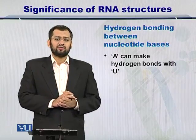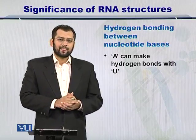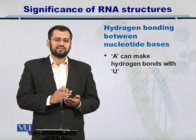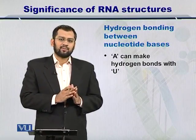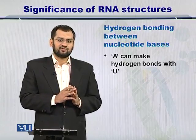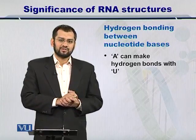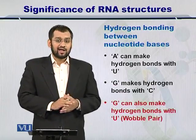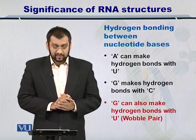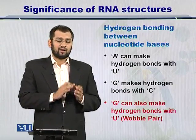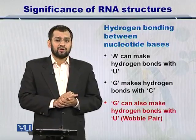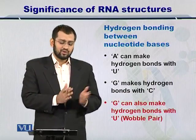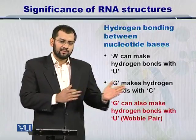To understand how these hydrogen bonds are formed: A can make a bond with U, and C can make a bond with G. So if the complementarity of A, C, U, and G is satisfied, they can form hydrogen bonds. Importantly, and differently from DNA, in the case of RNA, G can also form a bond with U. This is called a wobble base pair, and you must consider this while trying to couple the nucleotides on the backbone of an RNA.